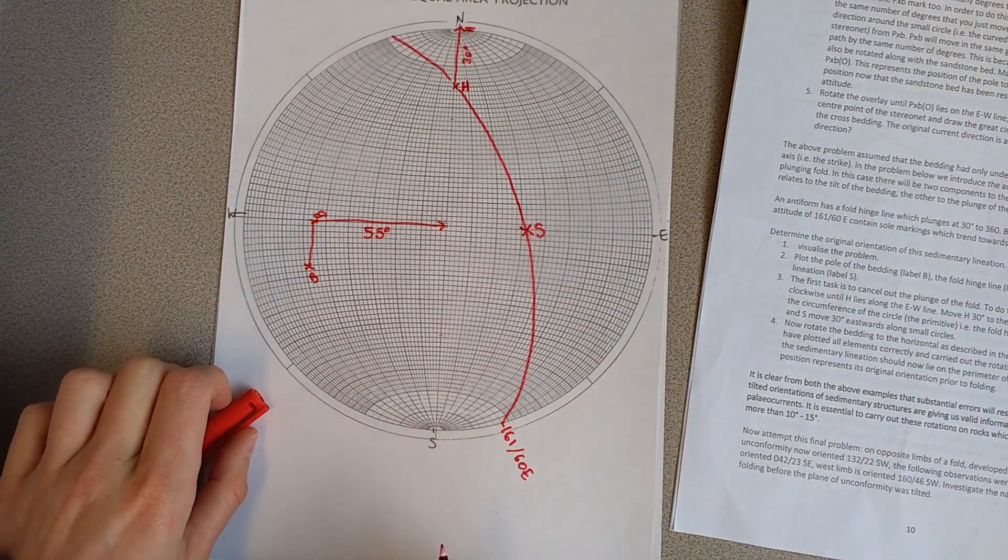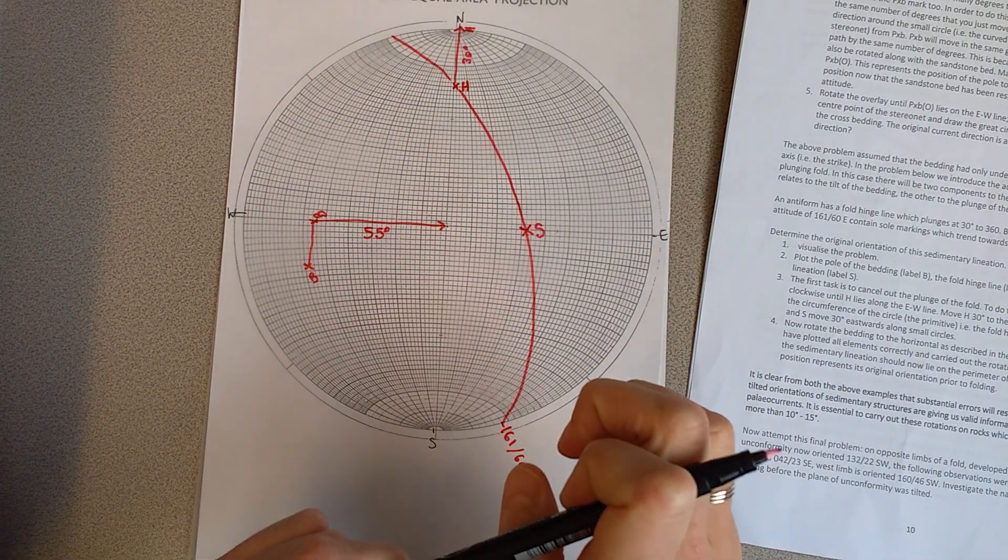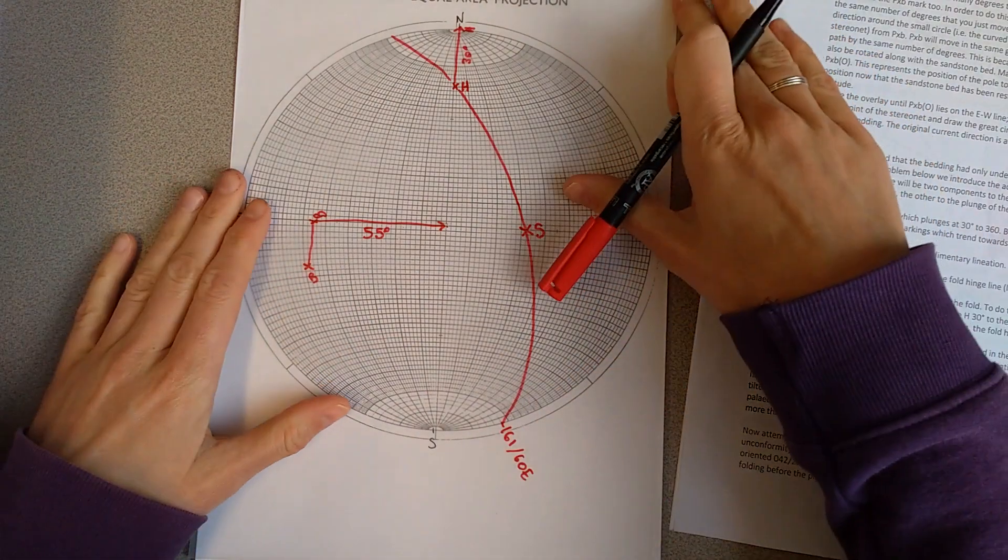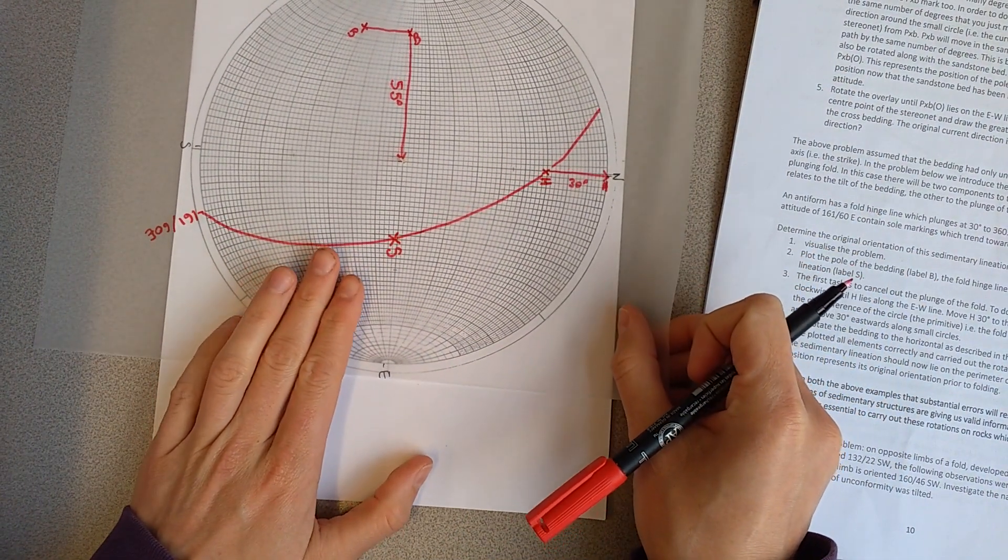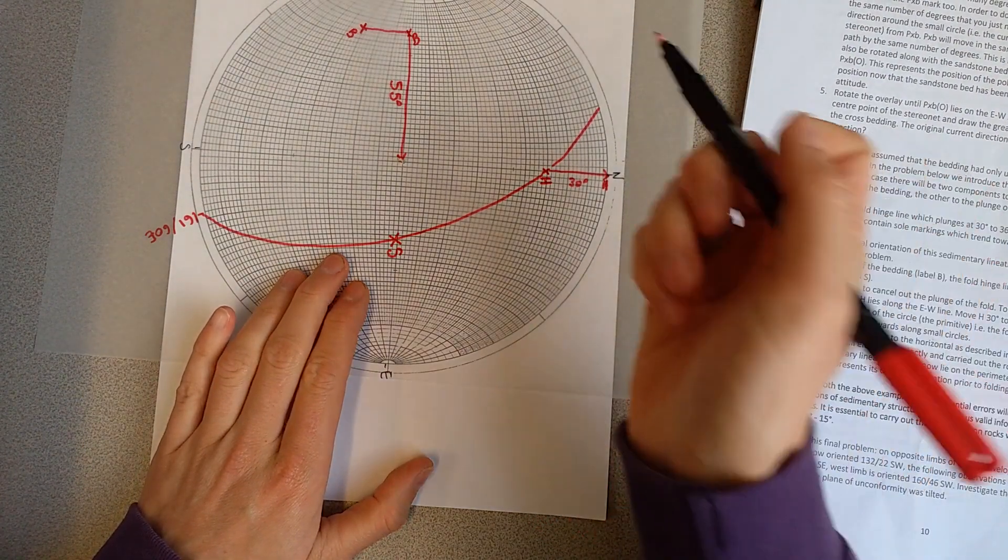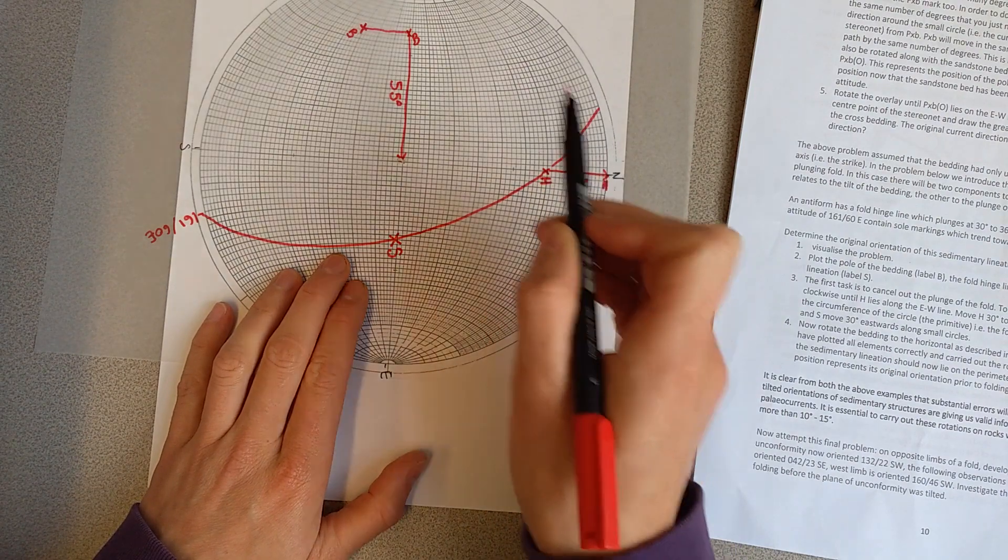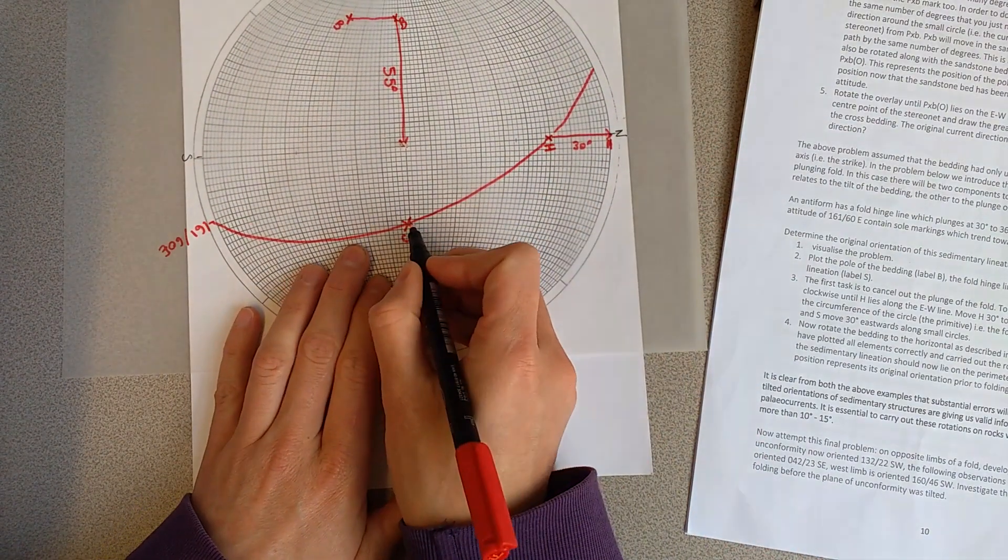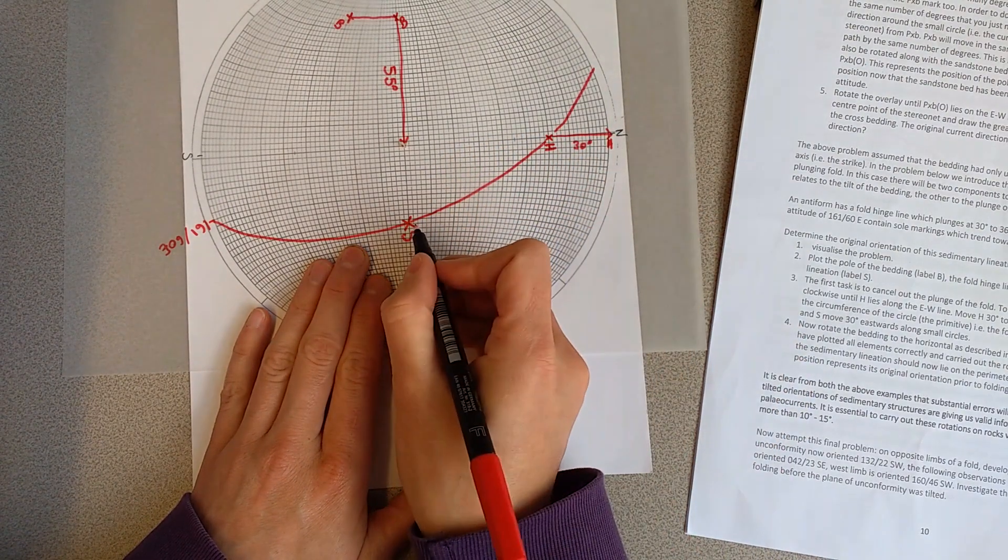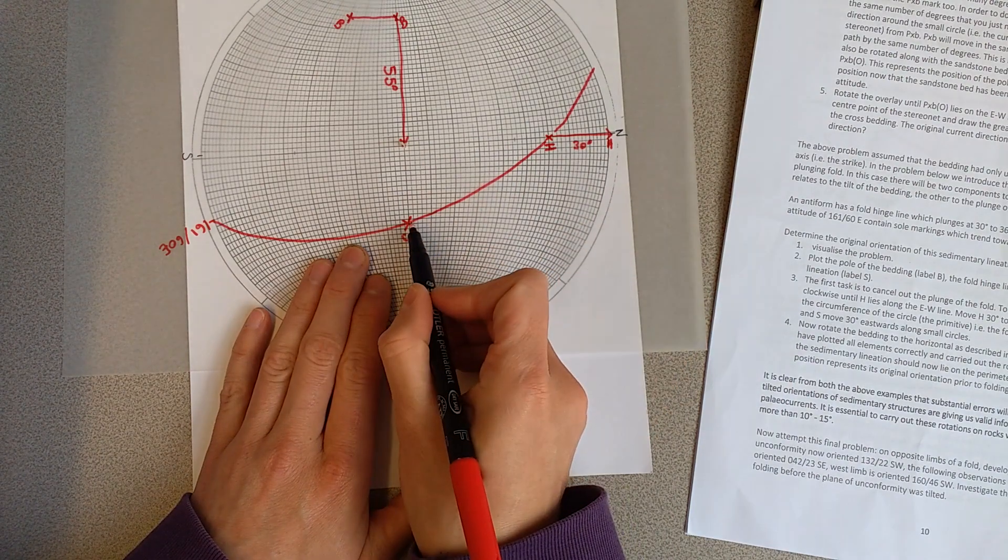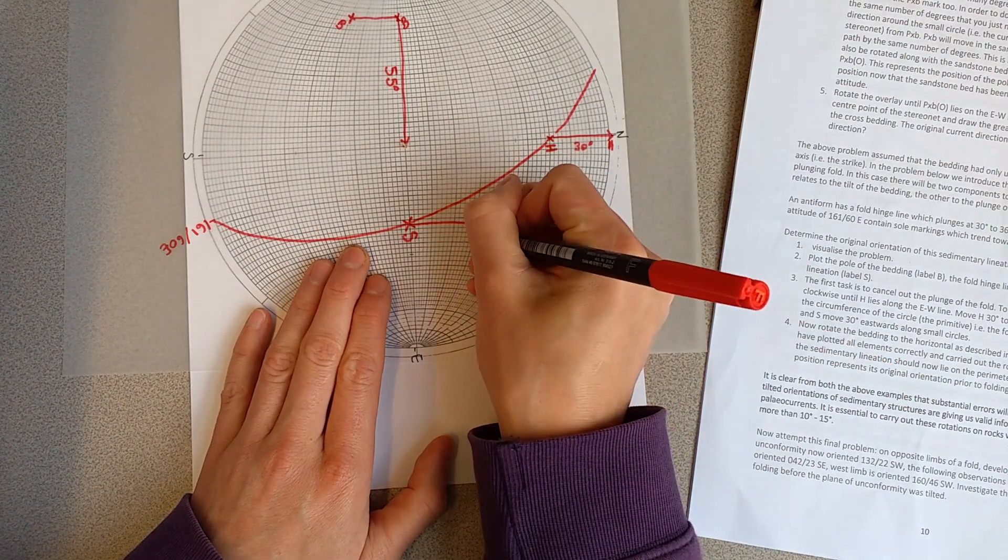And so what we can do is we can move, also, sorry, not that I'm confusing you, but I did forget one step. I didn't move the sole marks when we did the, when we restored the plunge of the trend. So when we moved the hinge up to zero, we also moved the bedding. We also need to move the sole marks. So keeping the H on the east-west line there, I'm now going to move my sole marks up by 30 degrees because this was the initial step. So that moves up to there. So that would be my S.